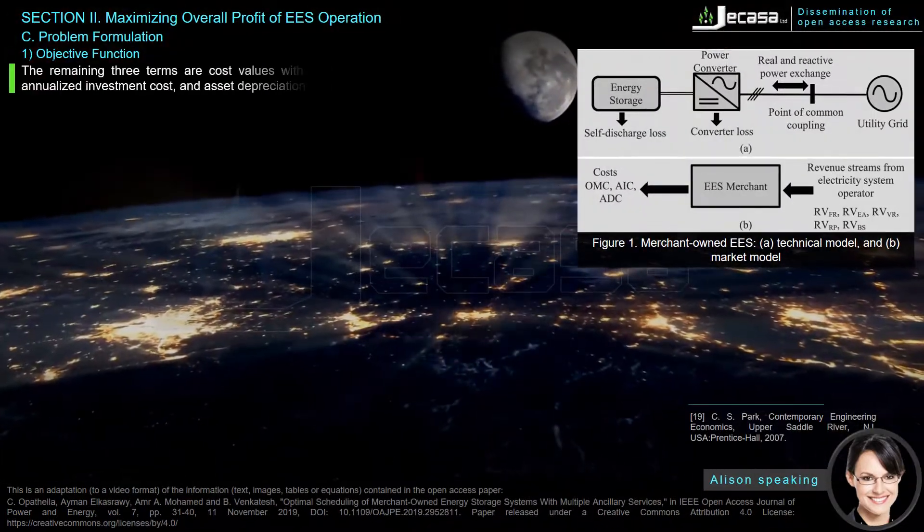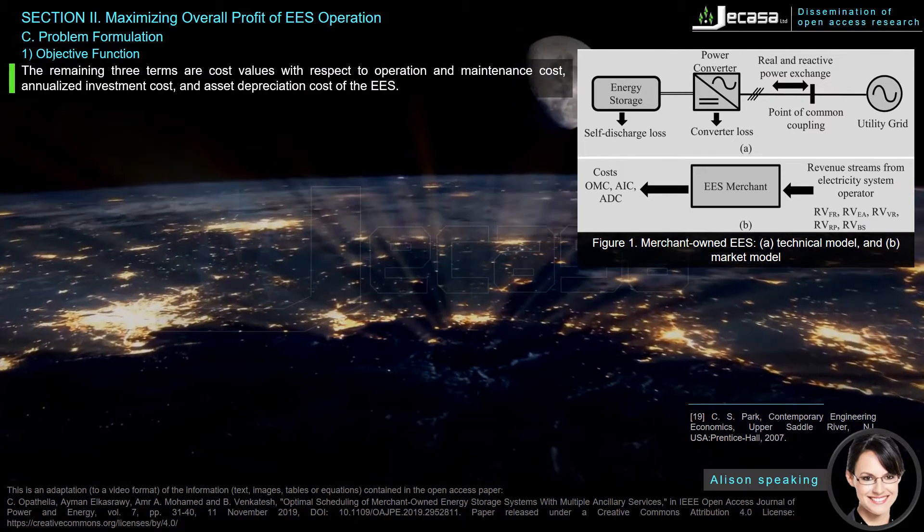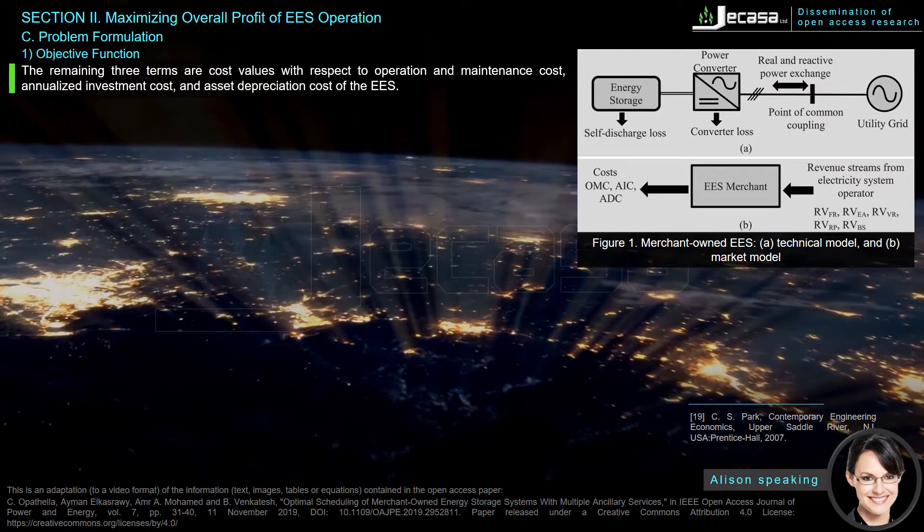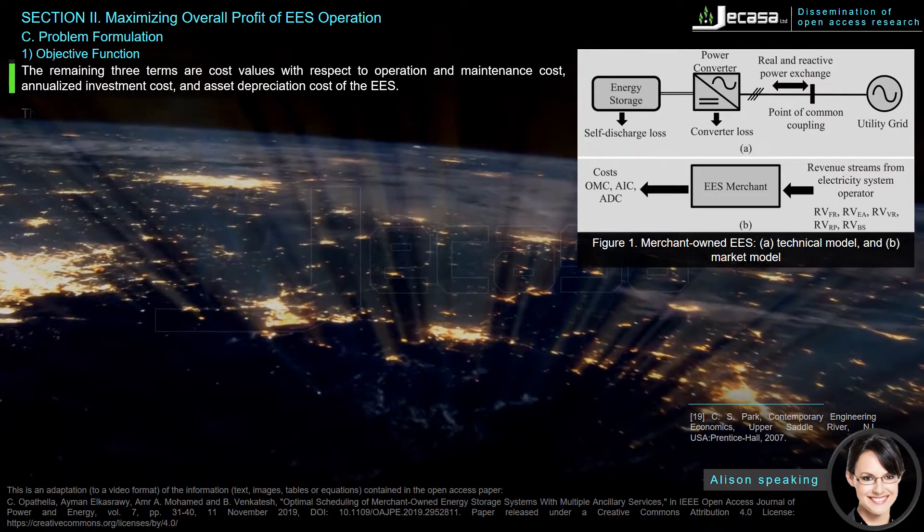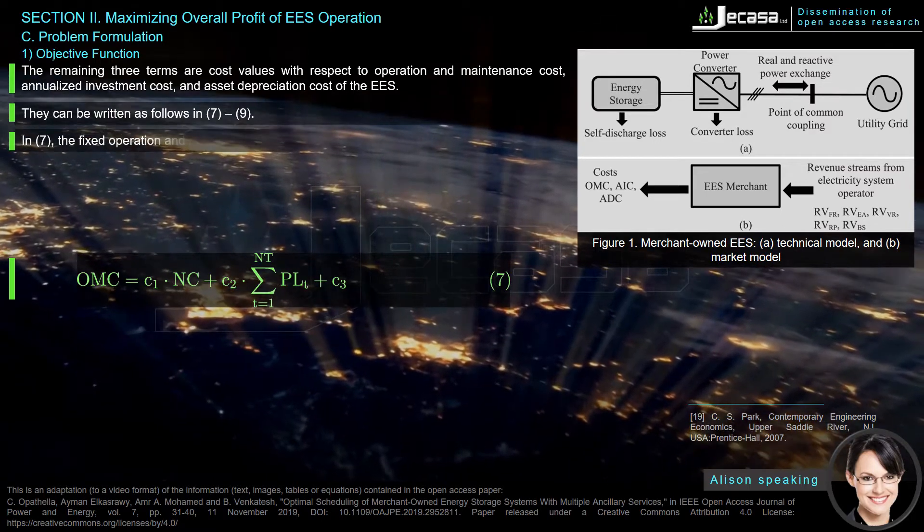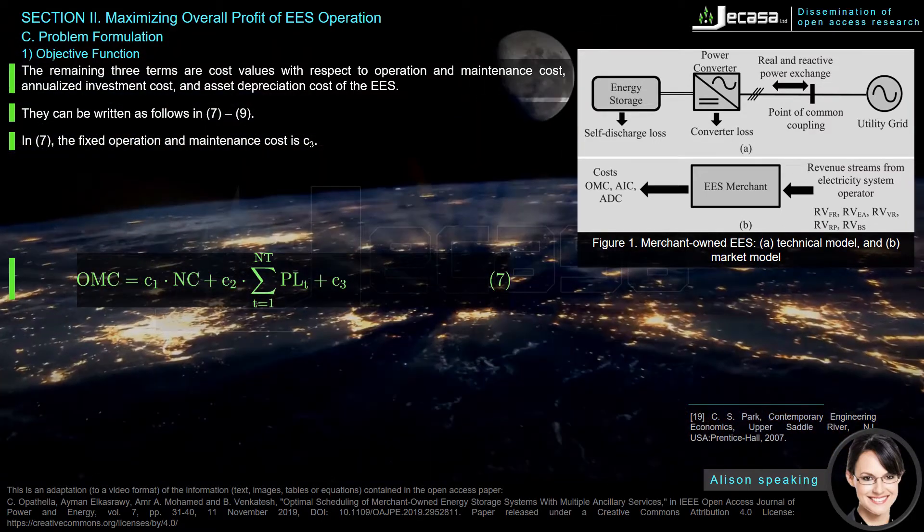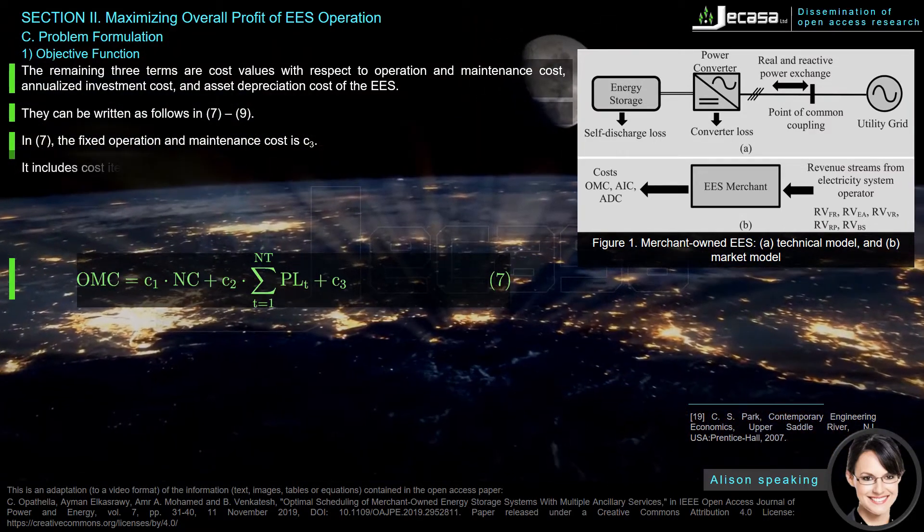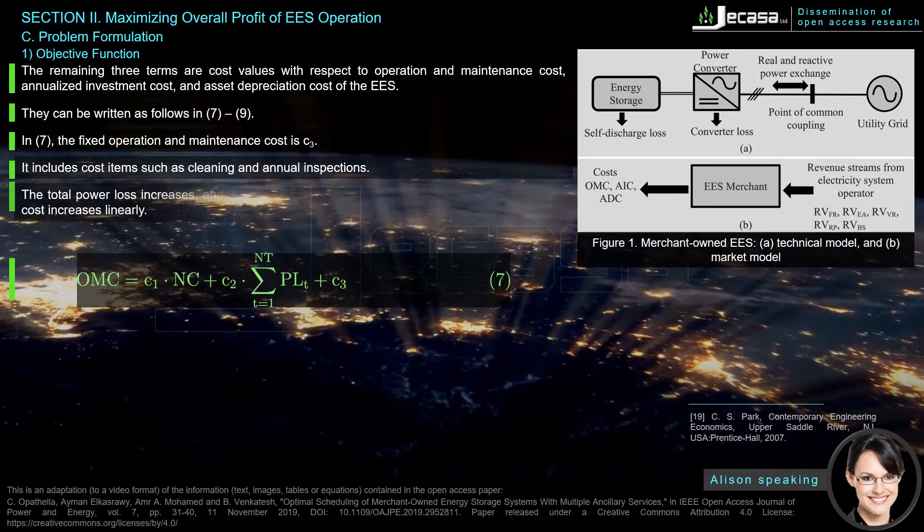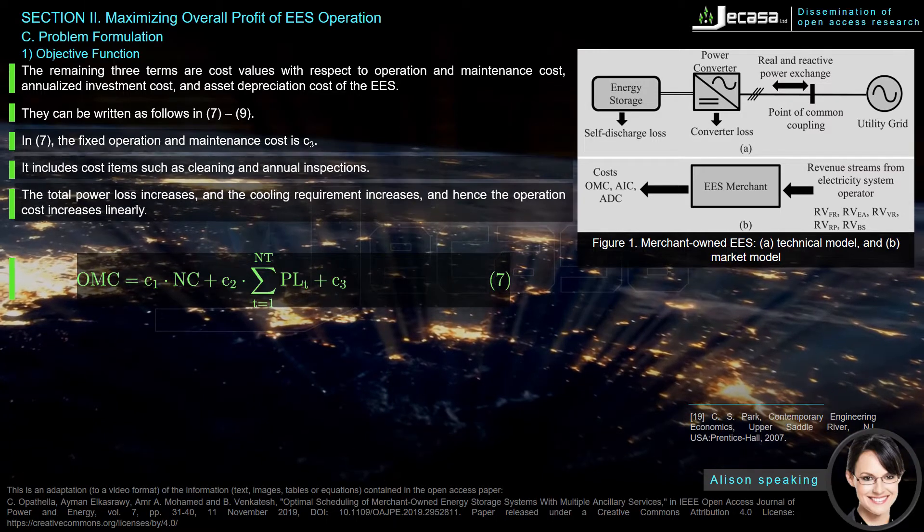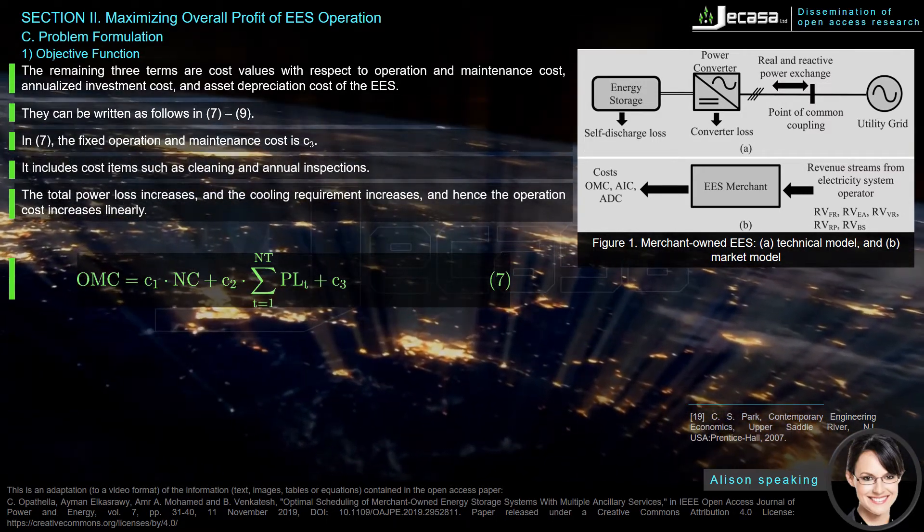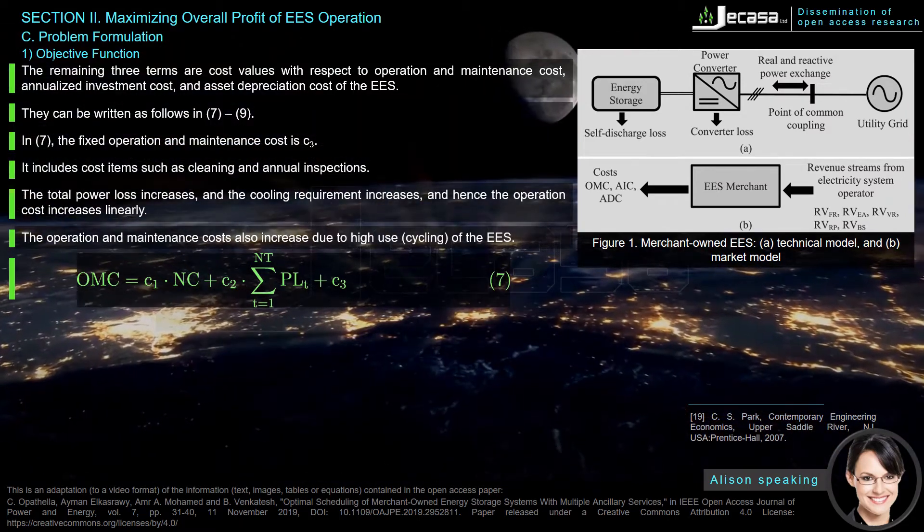The remaining three terms are cost values with respect to operation and maintenance cost, annualized investment cost, and asset depreciation cost of EES. They can be written as follows in equations (7) through (9). In (7), the fixed operation and maintenance cost is C3. It includes cost items such as cleaning and annual inspections. The total power loss increases and the cooling requirement increases, and hence the operation cost increases linearly. The operation and maintenance costs also increase due to high use cycling of EES.